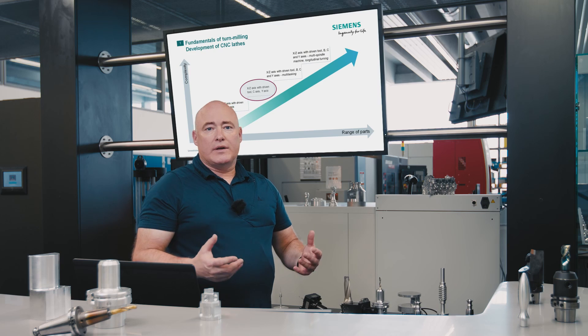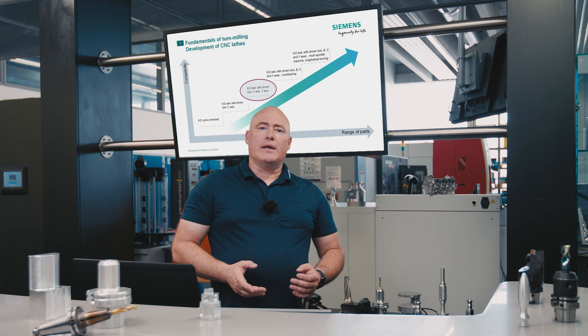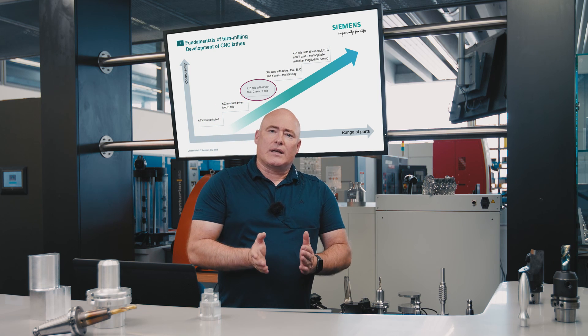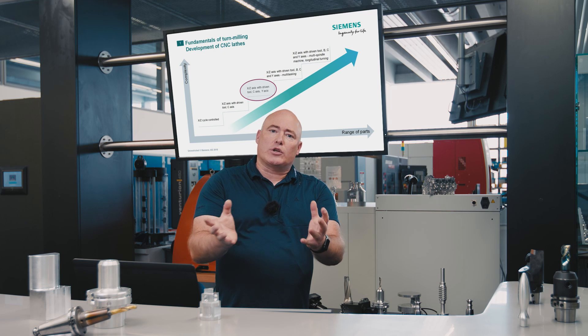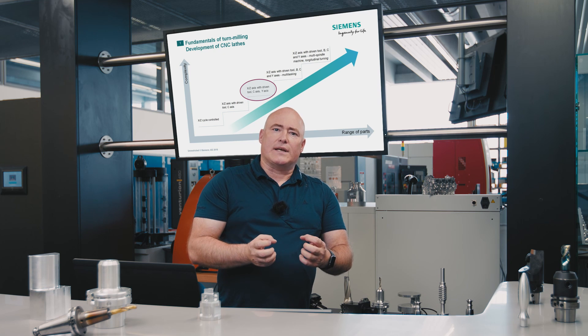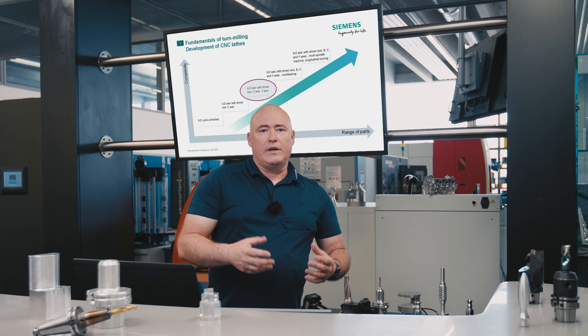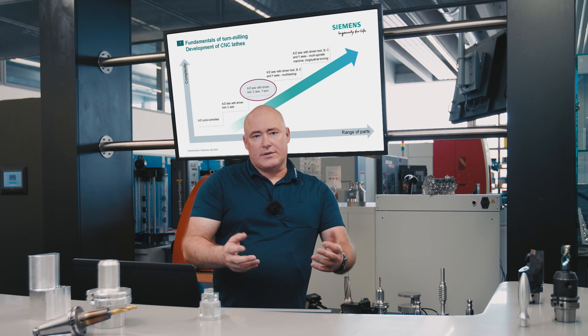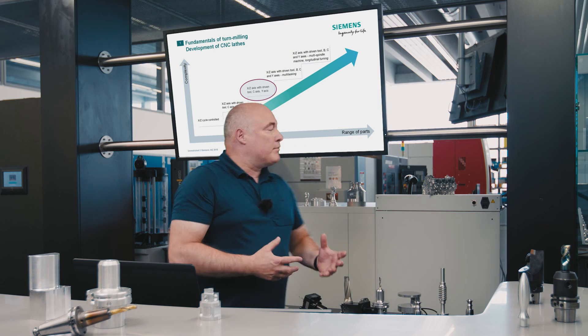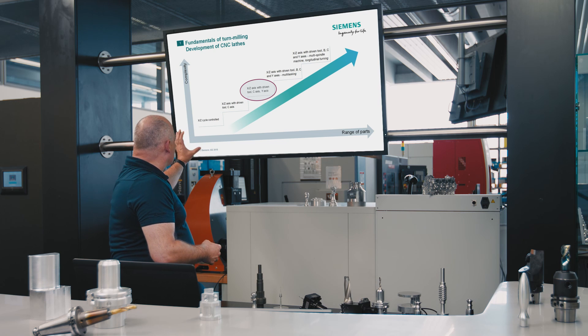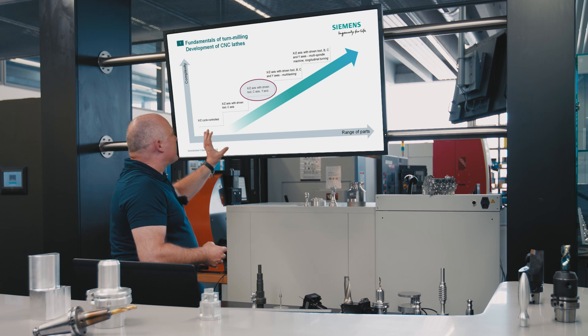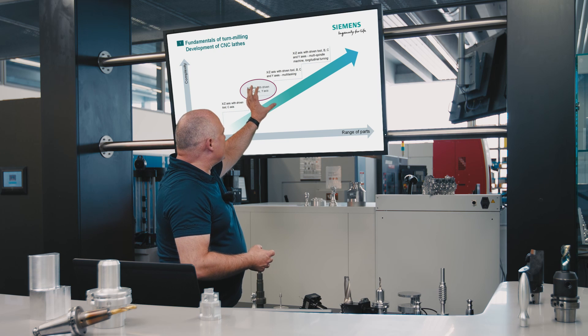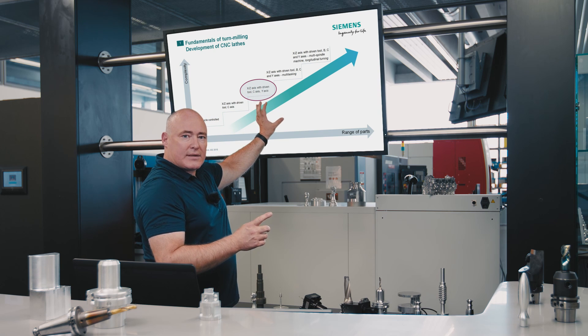The development of CNC turning machines has been marked by the increasing complexity of such machining centers and, of course, of the parts that they produce. Production times have become shorter and much more complicated parts can now be produced even within this shorter time. It all began with cycle-controlled machines using the X and Z axis and continued via machines with CY axes — turning milling machines, our topic for today.